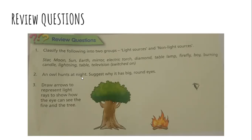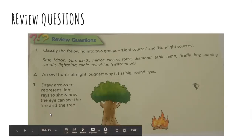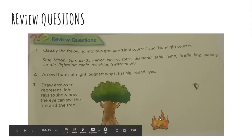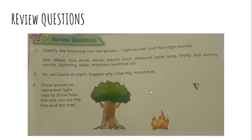An owl hunts at night — suggest why it has big eyes. Look at the condition at night: what is the light like? For drawing arrows to show how the eye can see the fire and the tree: the fire is a light source, so light from it travels in a straight line and directly enters our eyes. The tree is not a light source, but light from the fire falls on it and gets reflected in another direction, traveling in a straight line to reach the eyes.